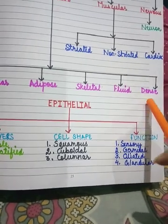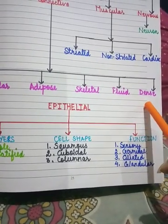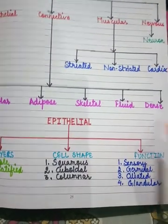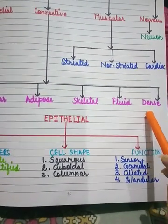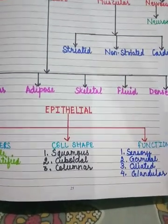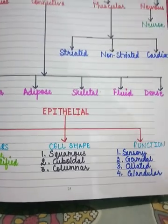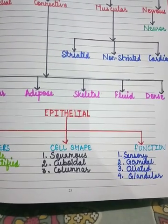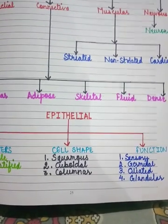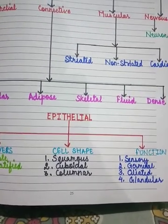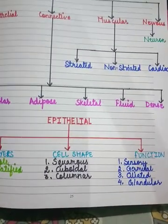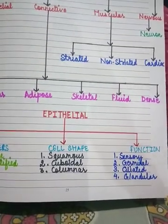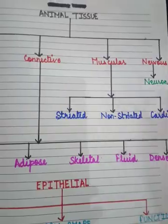Next is dense connective tissue, which includes tendons and ligaments. Tendons are white fibrous tissues made up of collagen, while ligaments are yellow fibrous tissues made up of elastic fibers and few collagen structures. Tendons join skeletal muscle with bone, while ligaments join two bones at one point.